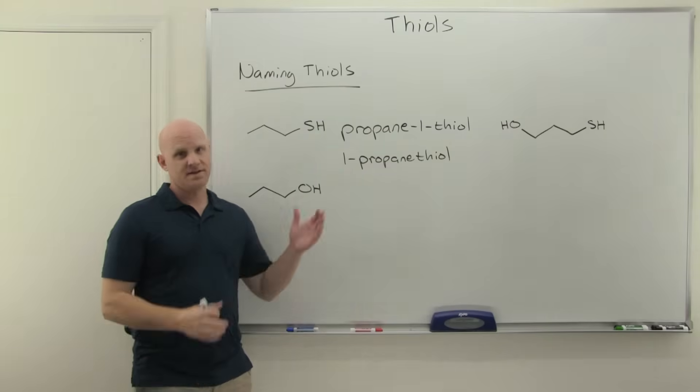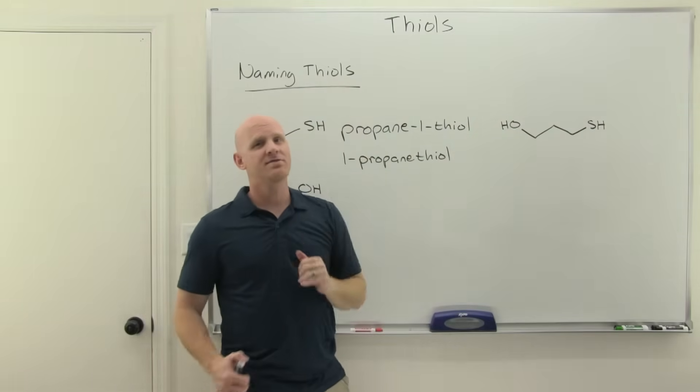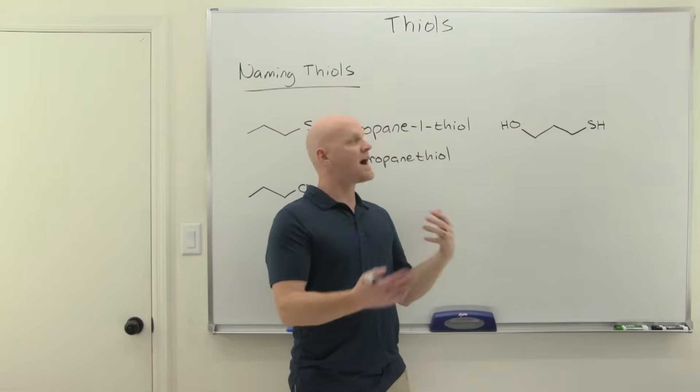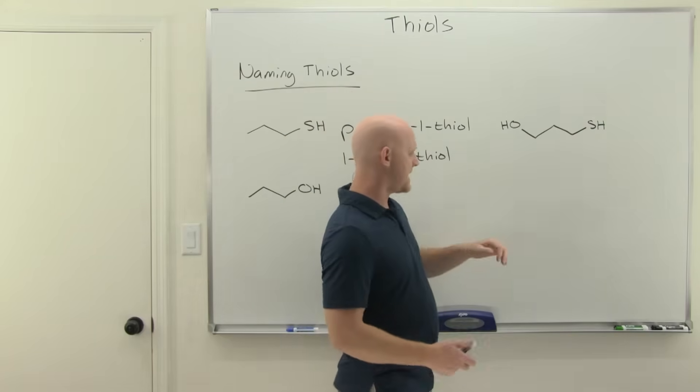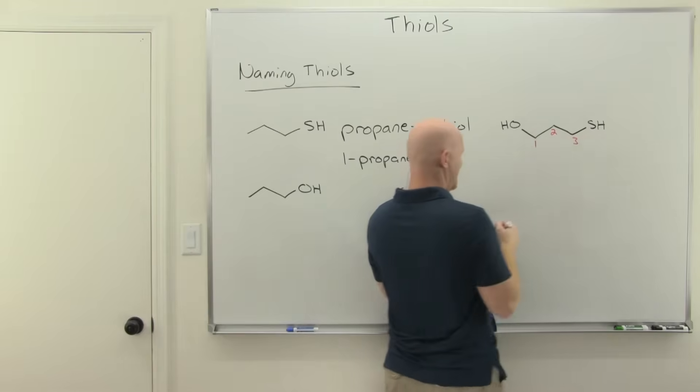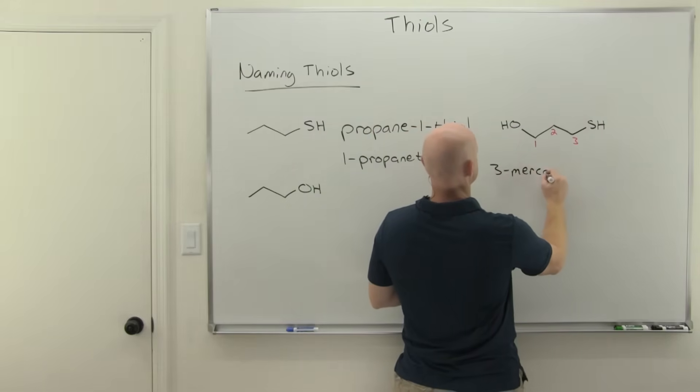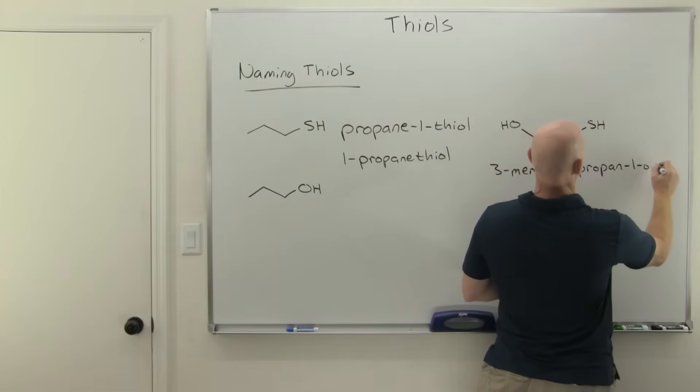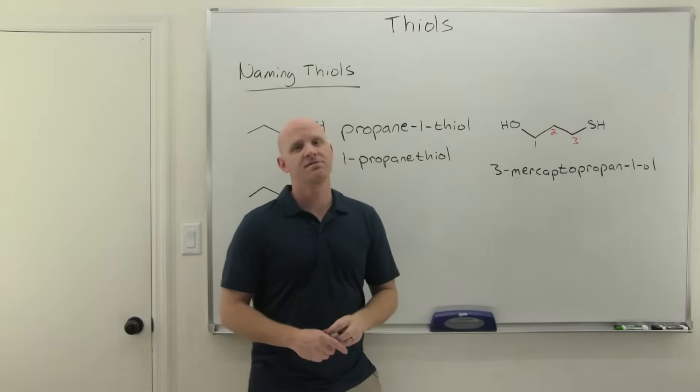That's if your thiol is the highest priority functional group in your molecule, but what if it's not? Like here I've got it with an alcohol, and alcohol has a higher priority than the thiol, in which case you're going to name the thiol as a substituent, and we call it a mercapto substituent. Both 'thiol' and 'mercapto' are old common ways of referring to sulfur. In this case, we name this as an alcohol for the parent chain, number it to give the alcohol the lowest possible number, and we see we've got this mercapto substituent at carbon three. So this is 3-mercaptopropan-1-ol, or 3-mercapto-1-propanol.